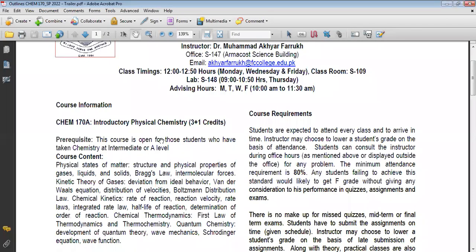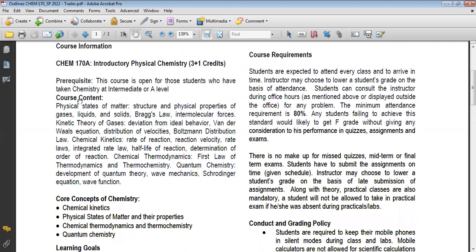Now coming to the course outline, what you are going to learn throughout the semester. This is a four-credit course, Introductory Physical Chemistry. These are the course contents, which are actually available in the catalog.